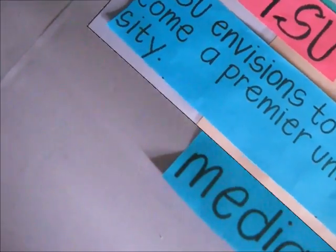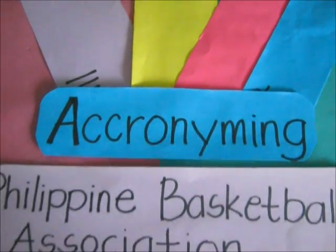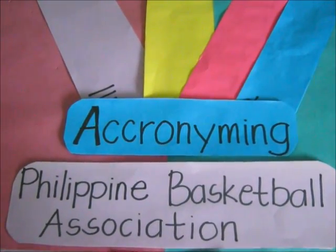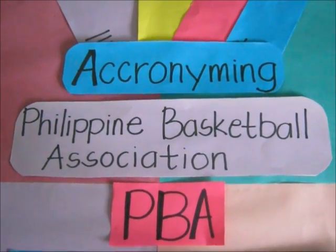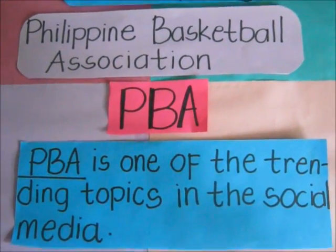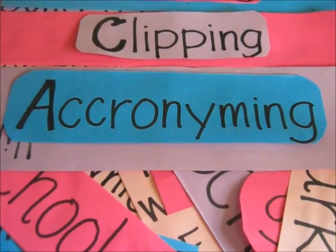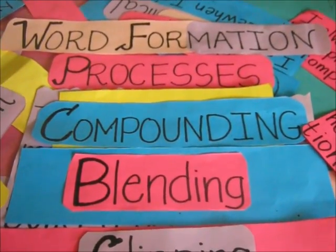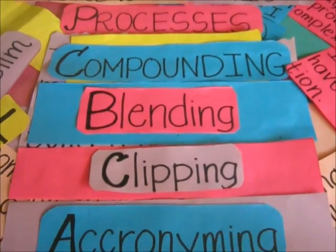Let's have another example of acronyming. 'Philippine Basketball Association' — the acronym is 'PBA.' For example: 'PBA is one of the trending topics in social media.' We have discussed the four types of word formation, which are compounding, blending, clipping, and acronyming.